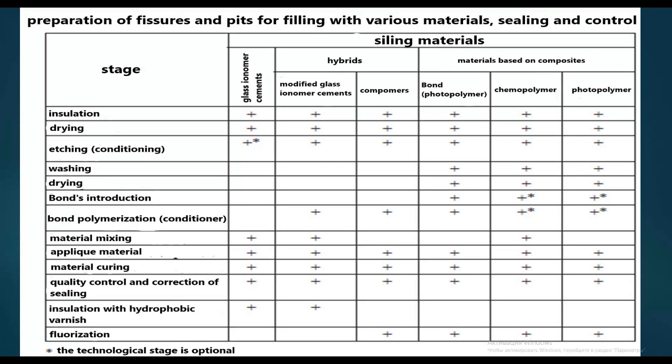If using modified glass ionomer cement: insulation, drying, etching, bond polymerization, material mixing, application of material, material curing, quality control and correction of sealing, insulation with hydrophobic varnish.